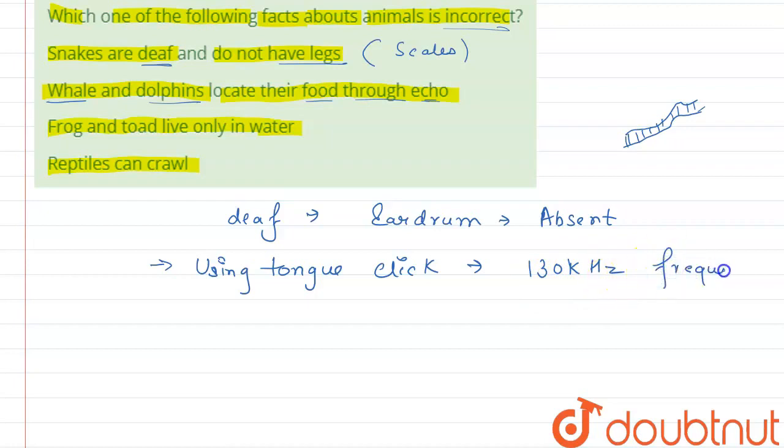130 kilohertz low frequency. So what happens, which means size, direction, speed we can know through echolocation.